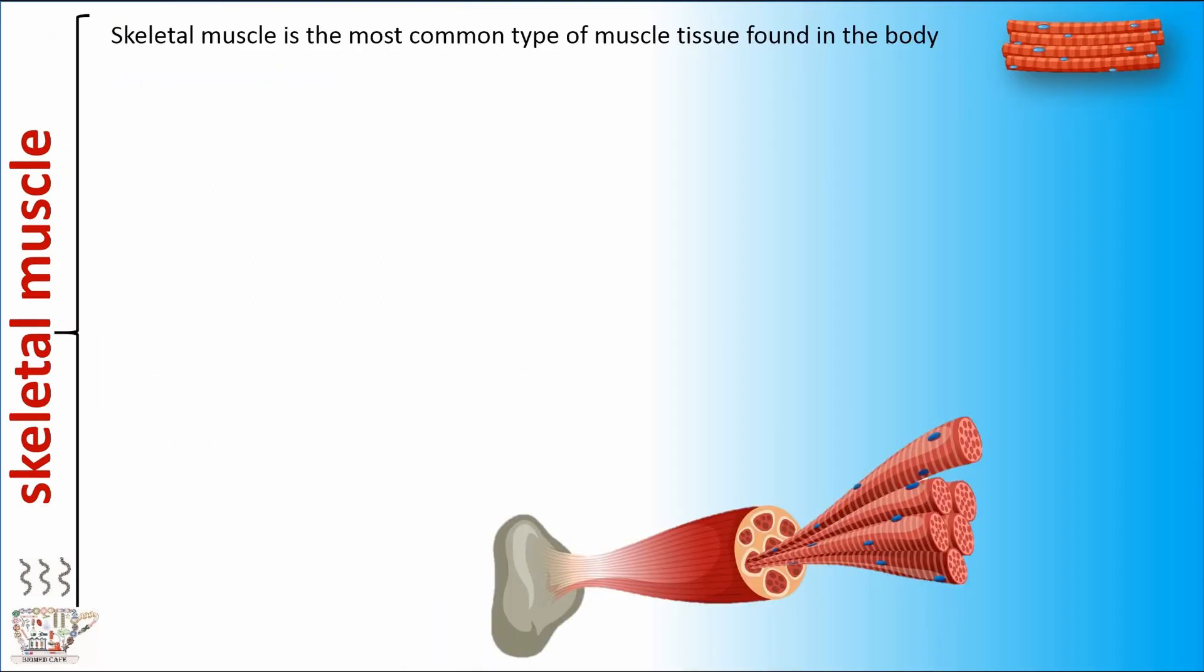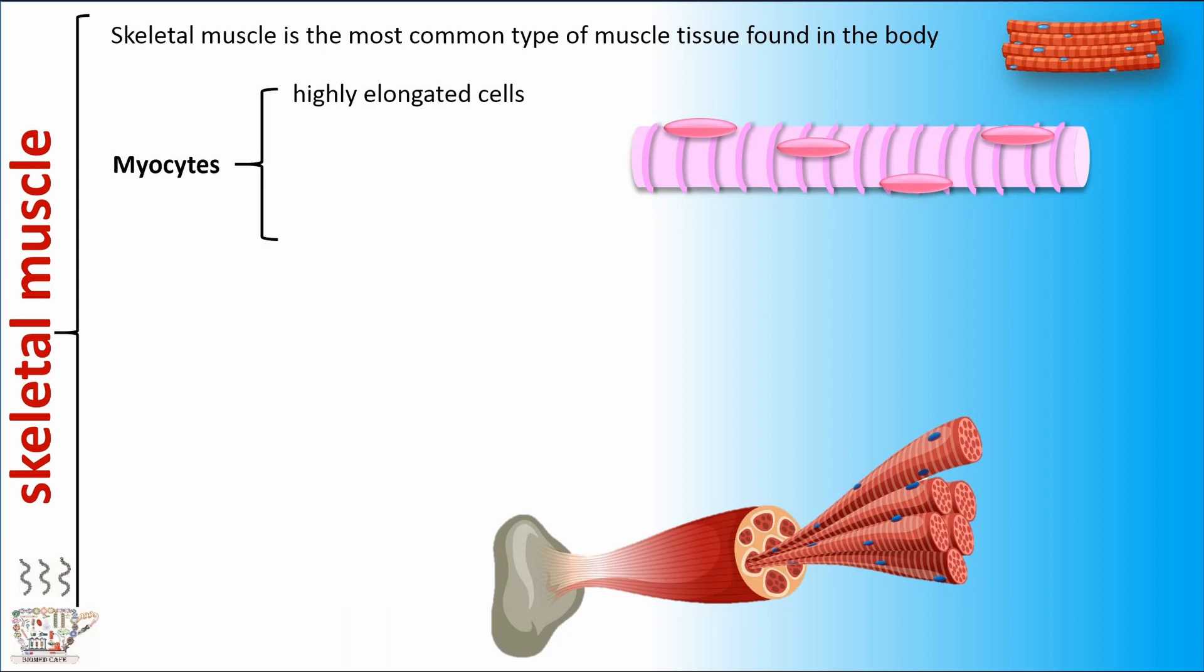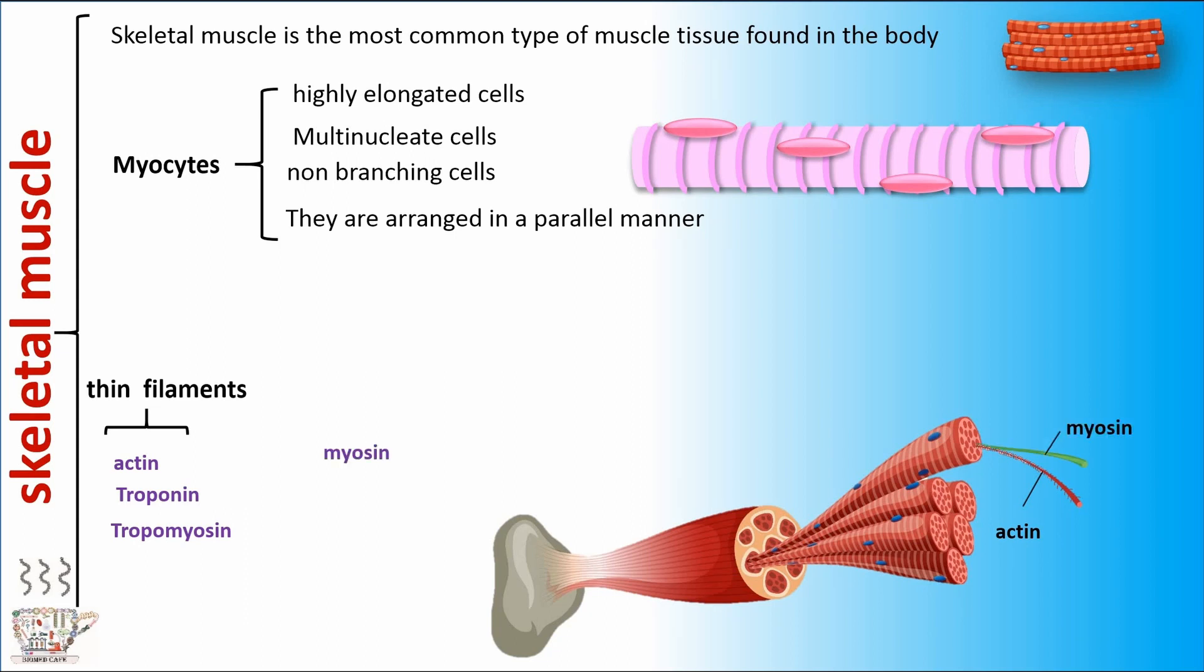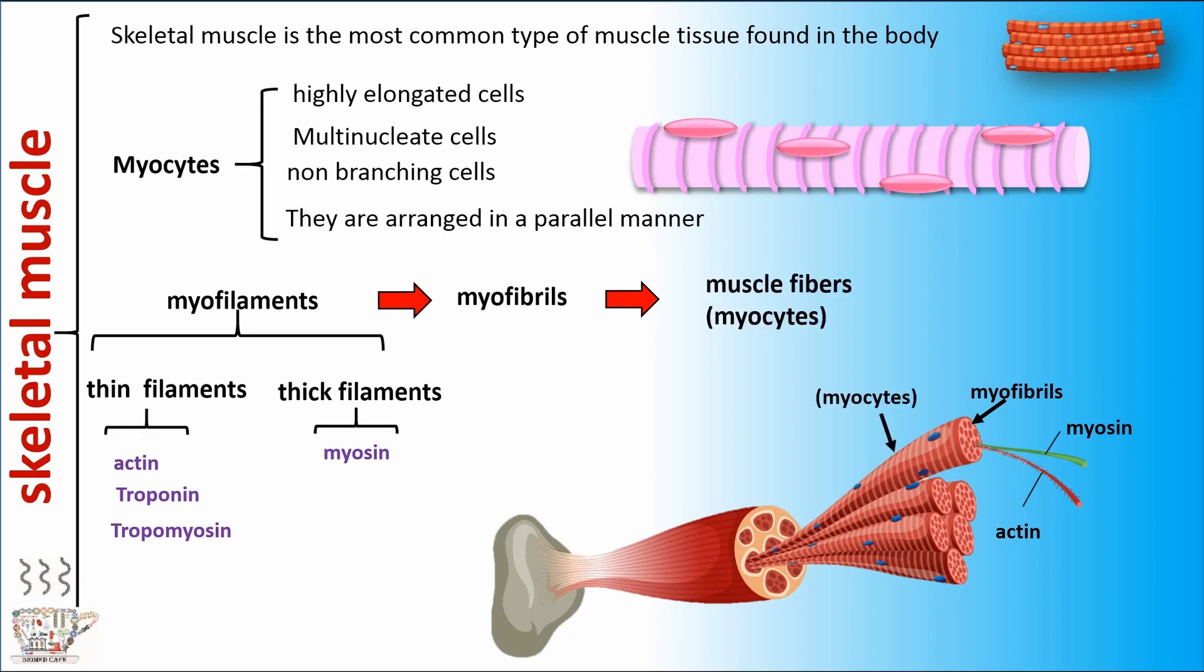Skeletal muscle is the most common type of muscle tissue found in the body. Myocytes are highly elongated, multinucleate, and non-branching cells arranged in a parallel manner. Tropomyosin, troponin, and actin make thin filaments. Myosin makes thick filaments. Thin filaments and thick filaments create myofilaments. A lot of myofilaments create myofibrils. A lot of myofibrils make muscle fiber or myocytes, and a lot of myofibrils create skeletal muscle.